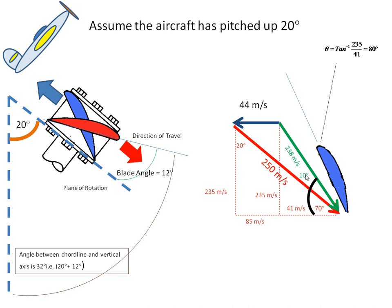But we've seen that the angle between the chord line and the plane of rotation is 12 degrees. So if that's 10 degrees, then our angle of attack is 2 degrees.